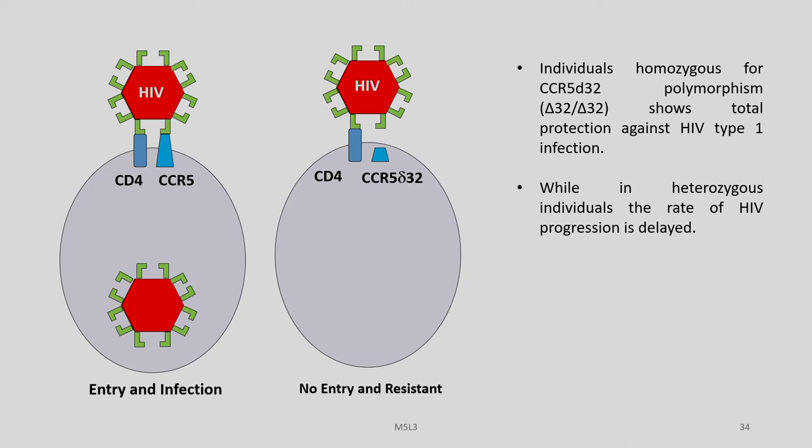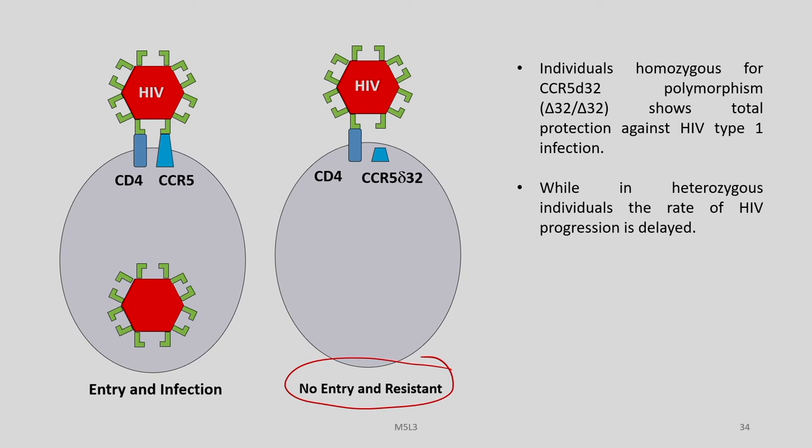Here is a picture which may be familiar from our discussion of ZFN technology. This shows the entry of HIV into a cell, which requires the presence of both CD4 and CCR5. You know about the CCR5-Del32 mutation, due to which there is a truncation in the protein, making the receptor unavailable for HIV binding. As a result, the virus cannot enter the cell, and such individuals are resistant to HIV infection, particularly those who are homozygous — showing a very high rate of resistance — while heterozygous individuals can delay the onset of HIV progression.